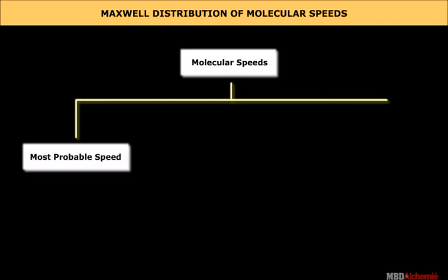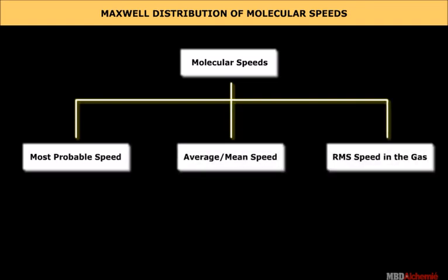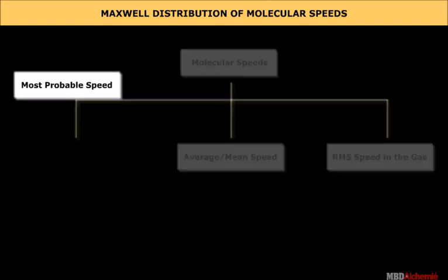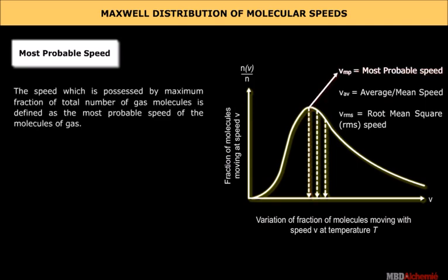Most probable speed: The speed which is possessed by maximum fraction of total number of gas molecules is defined as the most probable speed of the molecules of gas.